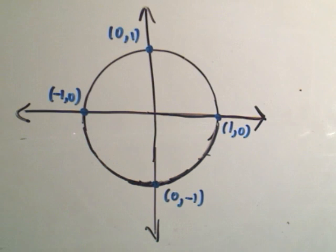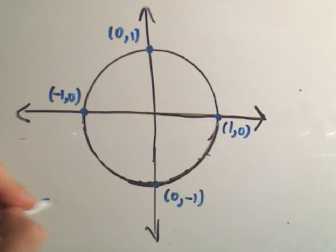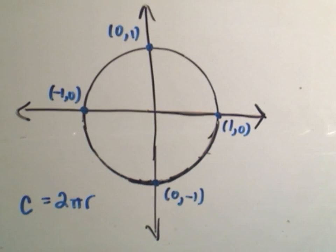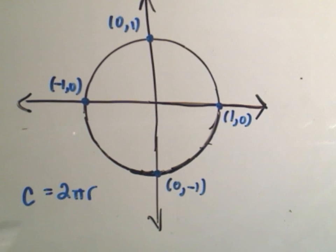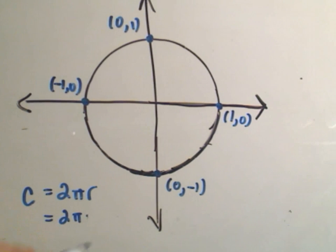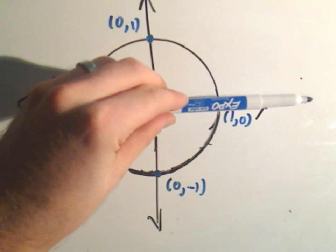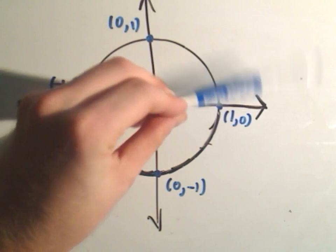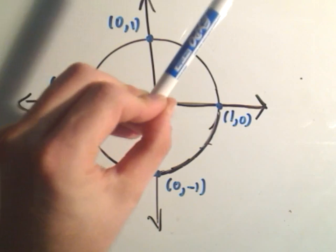Remember that the circumference of a circle is 2π times its radius. The unit circle has radius 1, so we get 2π times 1, or simply 2π. We measure angles from the positive x-axis, and we measure positive angles counterclockwise.